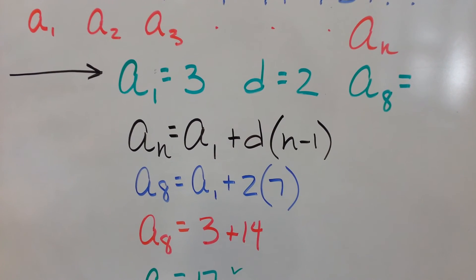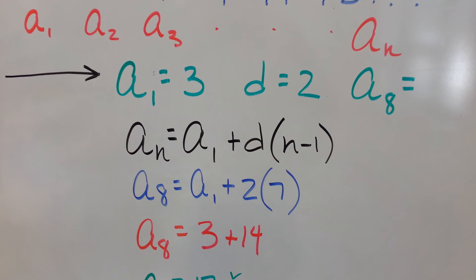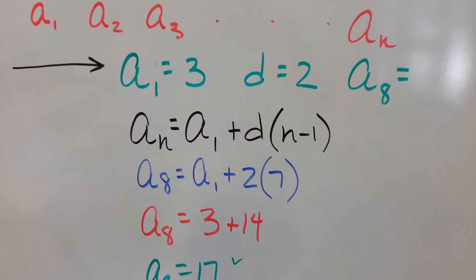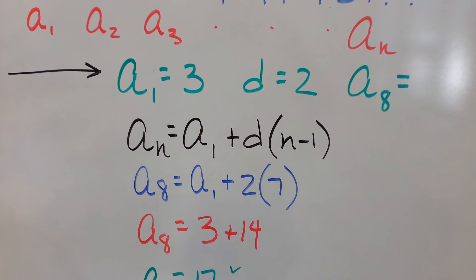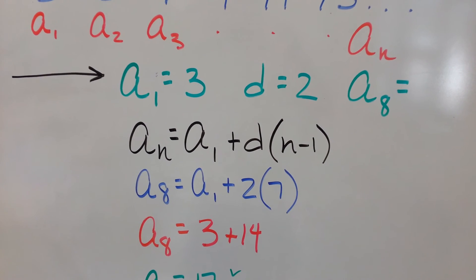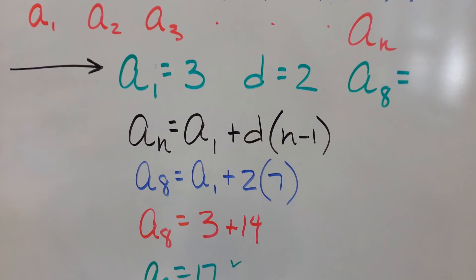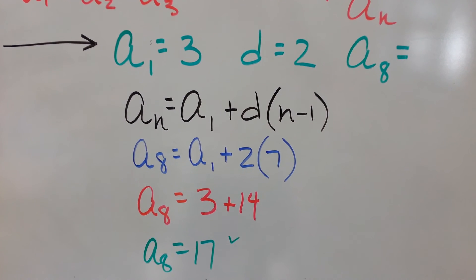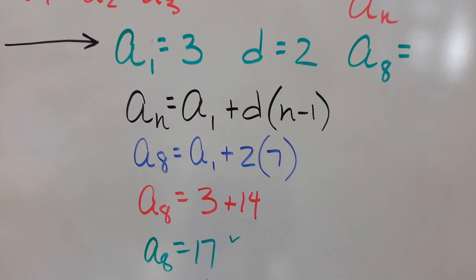Now hit pause if you have to and look at that. So in red, the 8th term is the first term, which is 3, plus 2 times 7 is 14. So the 8th term in that sequence must be 17.